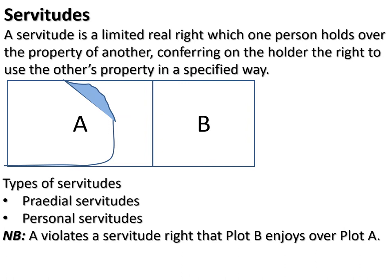A servitude is a limited real right which one person holds over the property of another, conferring on the holder the right to use the other person's property in a specified way. Access to a water point by B is a requirement — otherwise his livestock will not survive without water — so A has to open up his farm so that B can access the water for that purpose.